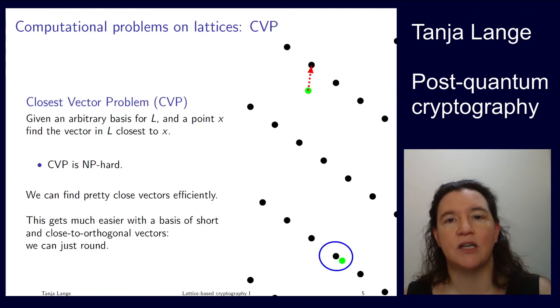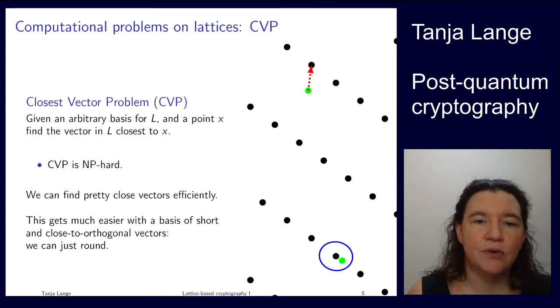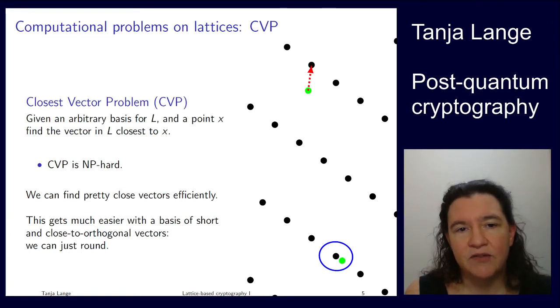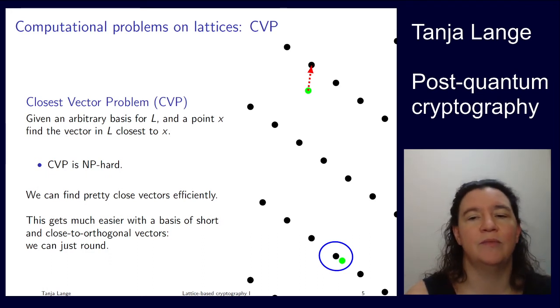Another typical problem in lattices is the closest vector problem, which says, given some point in space, this x here, find the point that is in the lattice that is closest to it, or find something which is within some approximation. Similar to the SVP, it is exponential time, CVP is even NP-hard. But if we are relaxing this and say we want something which is somewhat close, anything within some cloud, within some blue circle here, or ellipse here, that could be a bigger one.